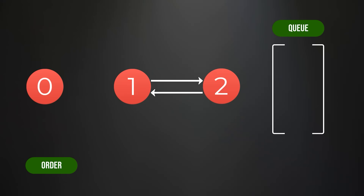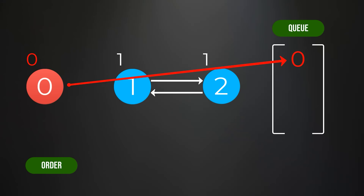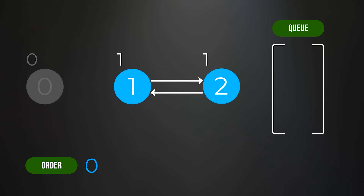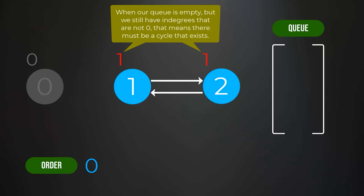Let's look at one more example. We have three nodes, and the indegree counts are: node 0 has an indegree of 0, node 1 has an indegree of 1, and node 2 has an indegree of 1. Node 0 gets added to our queue since it's the only node with an indegree of 0. Node 0 is removed and added to the topological ordering, but no nodes depend on it, so the queue becomes empty. Notice that nodes 1 and 2 still have indegree counts that are not 0 — this means they must be part of a cycle, and looking at the graph, they obviously are.